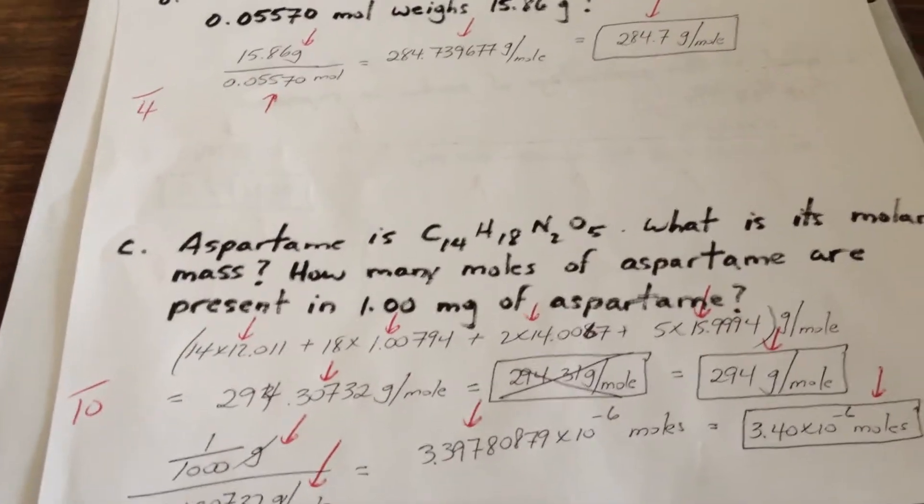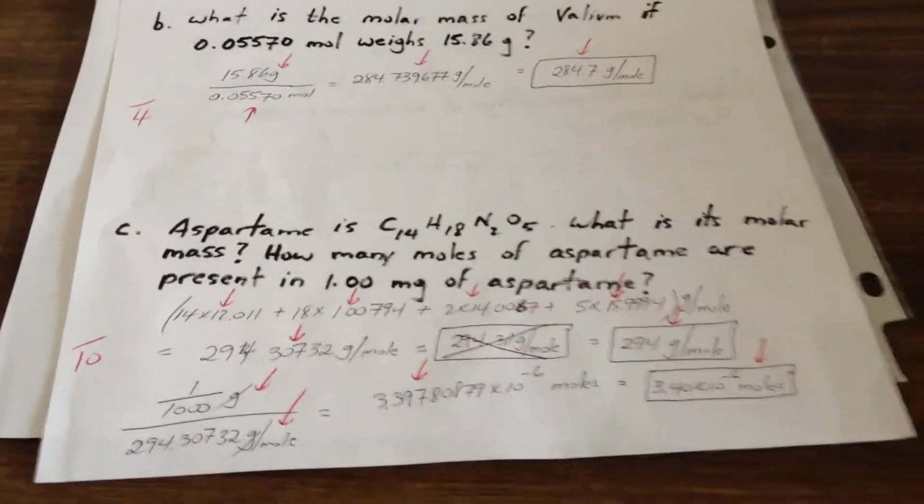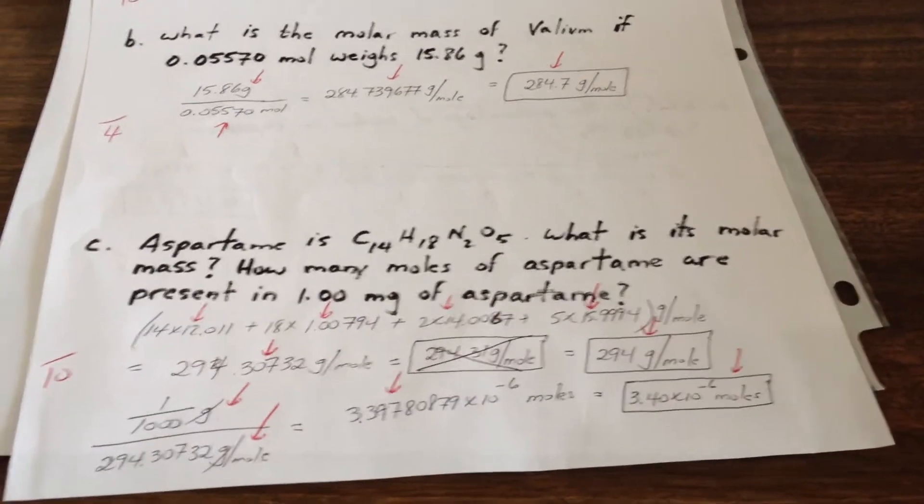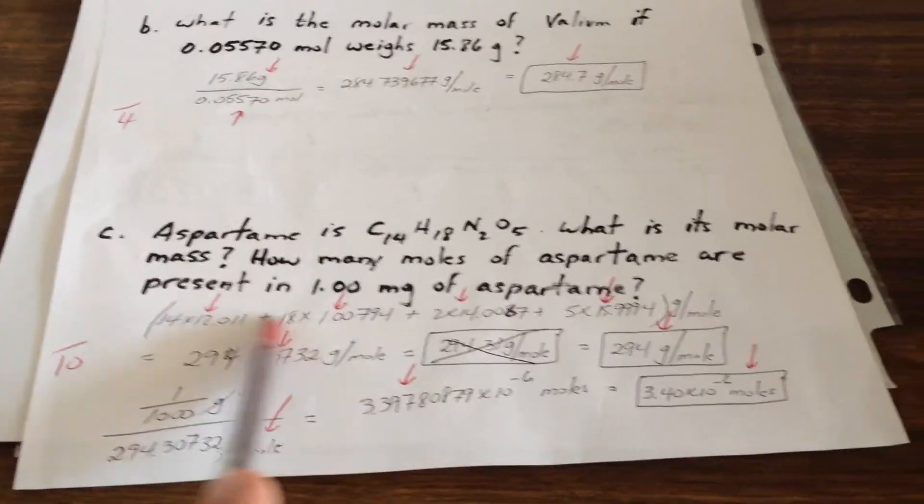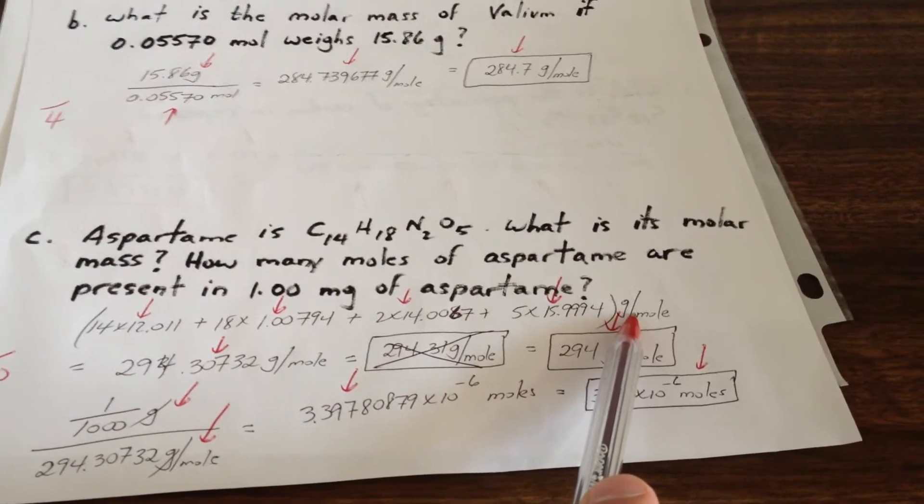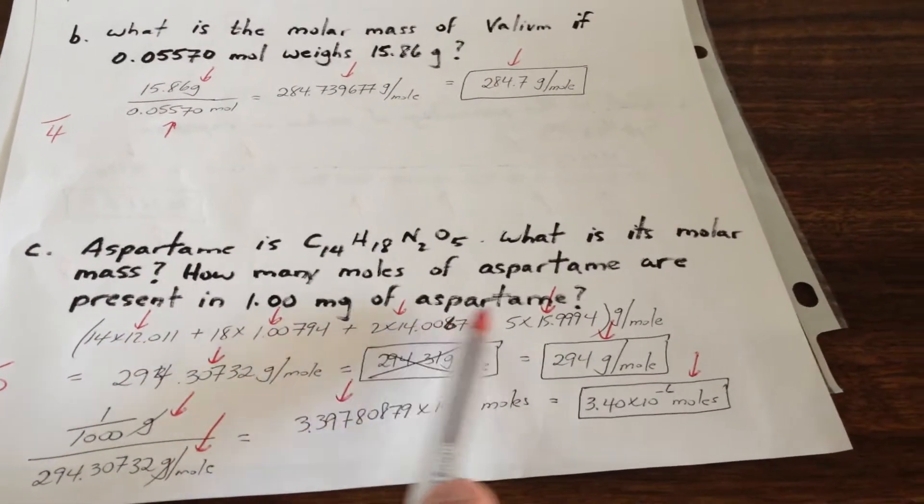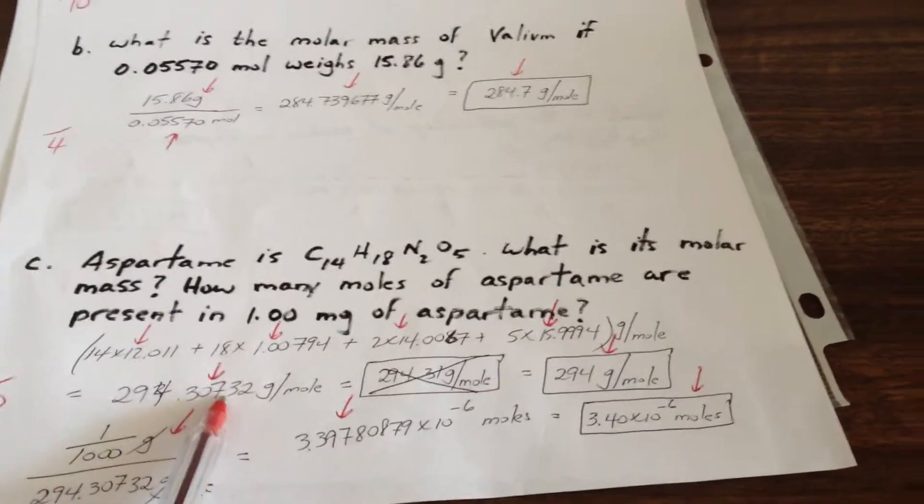Aspartame is C14, H18, N2O5. What is its molar mass? How many moles of aspartame are present in one milligram of aspartame? Here's the molar mass of aspartame calculated here. This represents carbon. That represents the hydrogen. That represents nitrogen. This is the oxygen. Here's the molar mass.